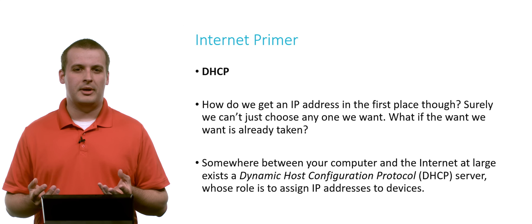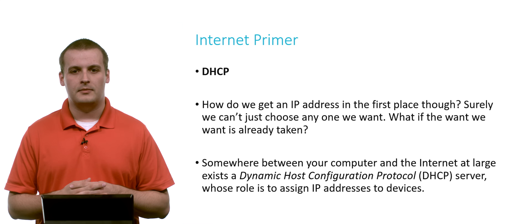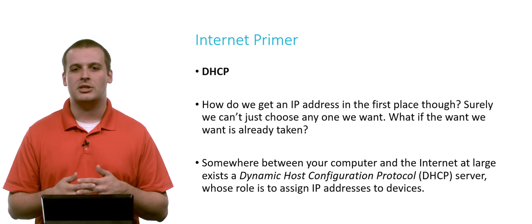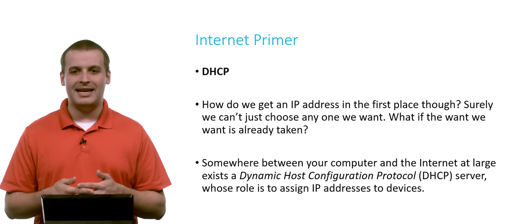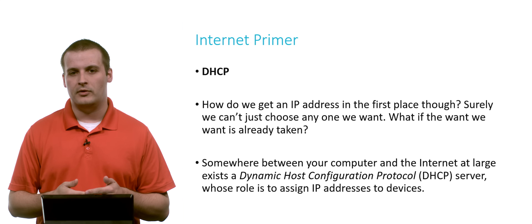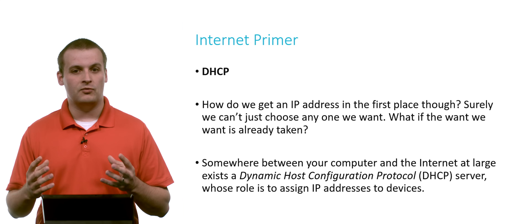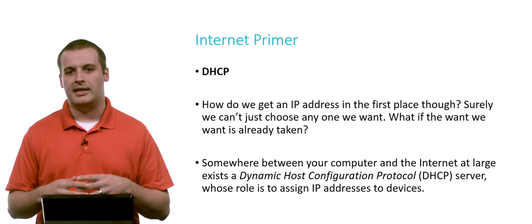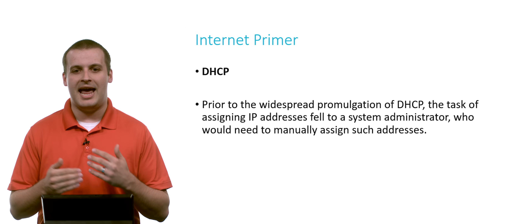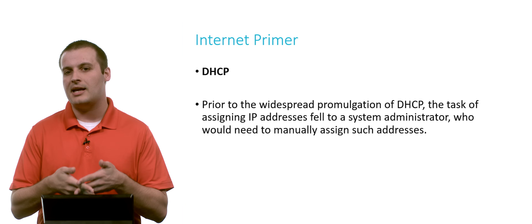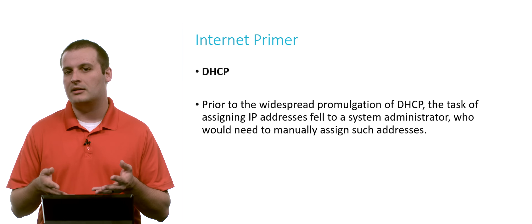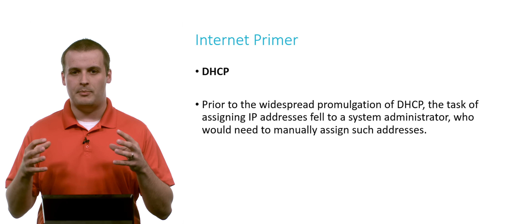So now we know a little bit more about IP addresses, but how do we get them? We can't just pick the one we want — we might end up fighting somebody for the same IP address. So the way that we get an IP address is through something called a DHCP server — a Dynamic Host Configuration Protocol server. It's a big mouthful, but really all it does is assign you an IP address. Your DHCP server has a list of addresses that it can validly assign and it gives you one. Before DHCP, this task fell to a system administrator who would manually assign your computer an address. DHCP just automates this process — it's a program running somewhere between you and the internet that has a bank of IP addresses it can give out, and when you connect to the network, it gives you one.